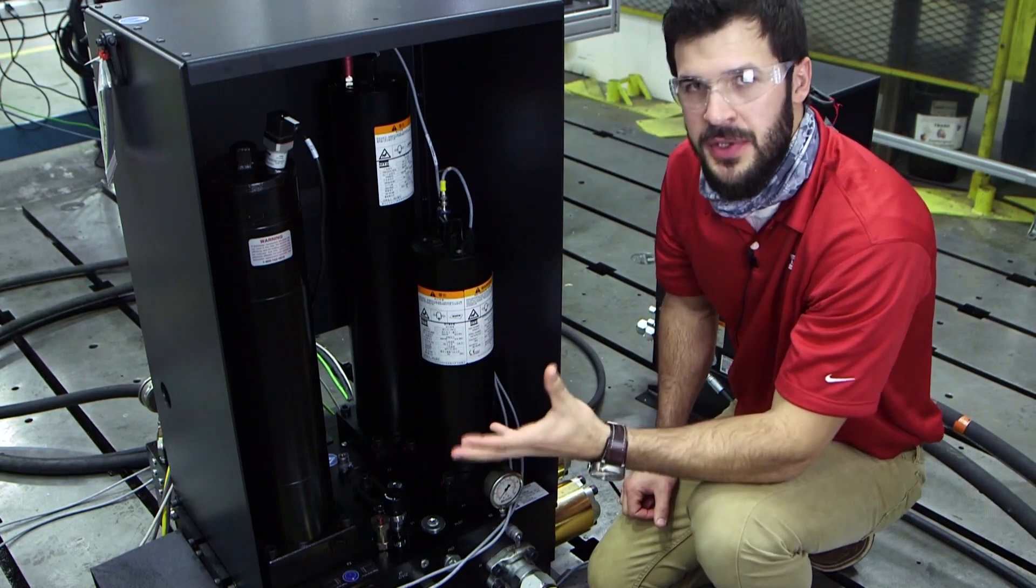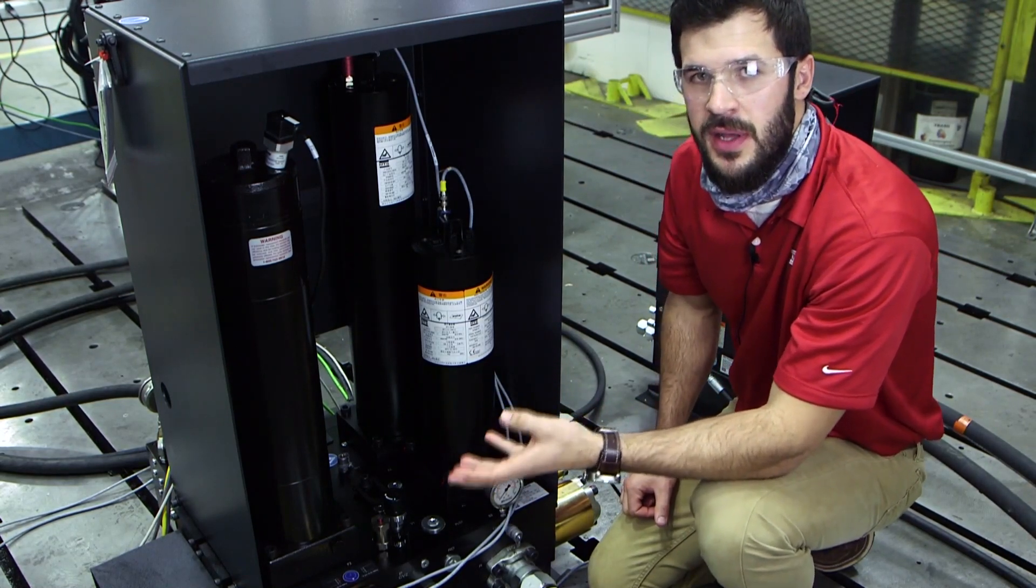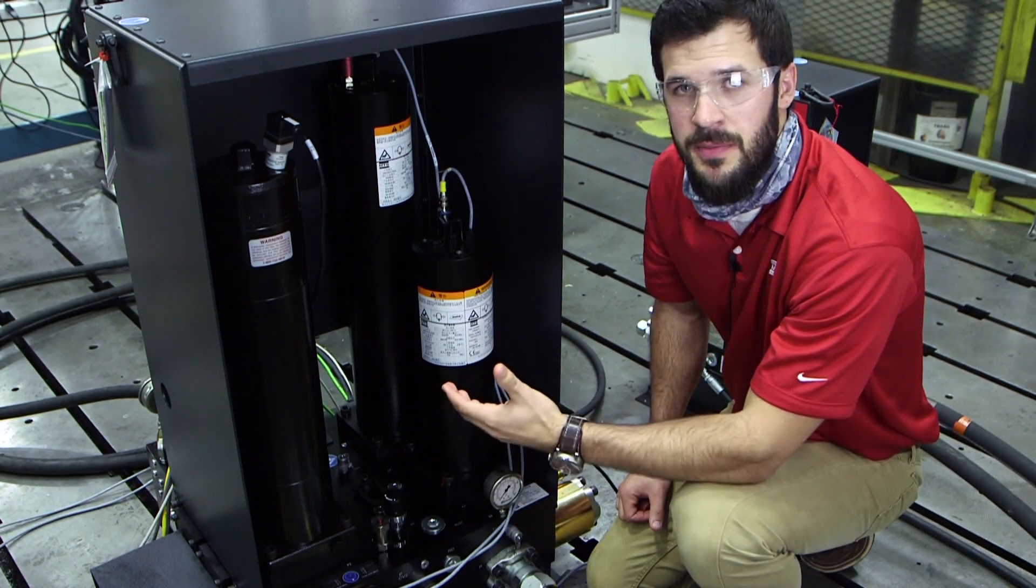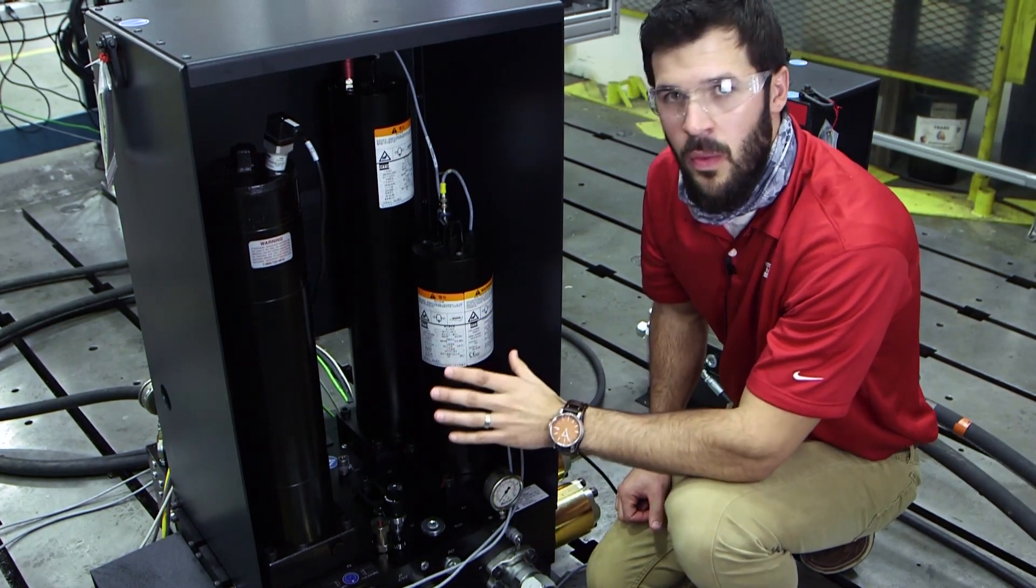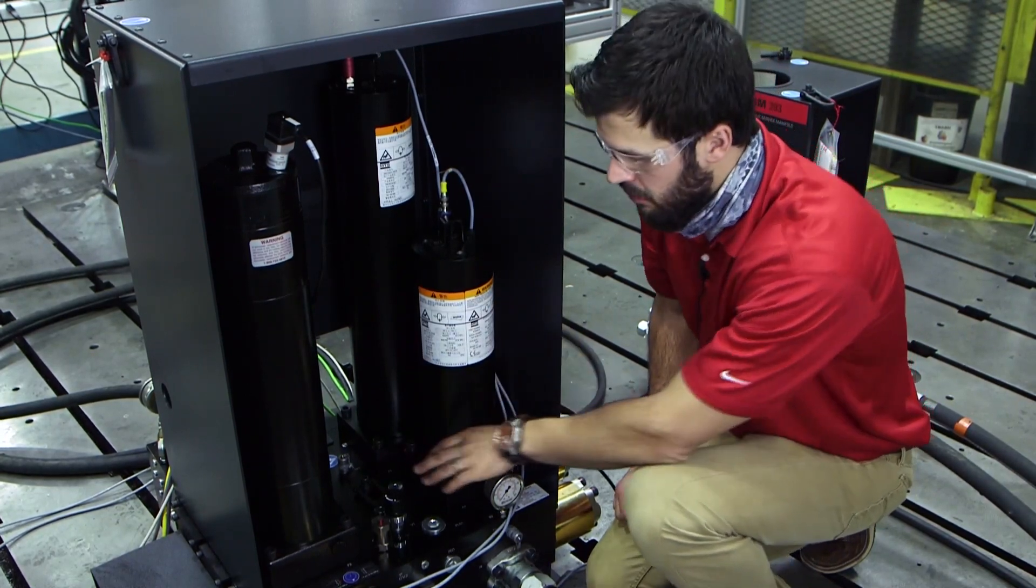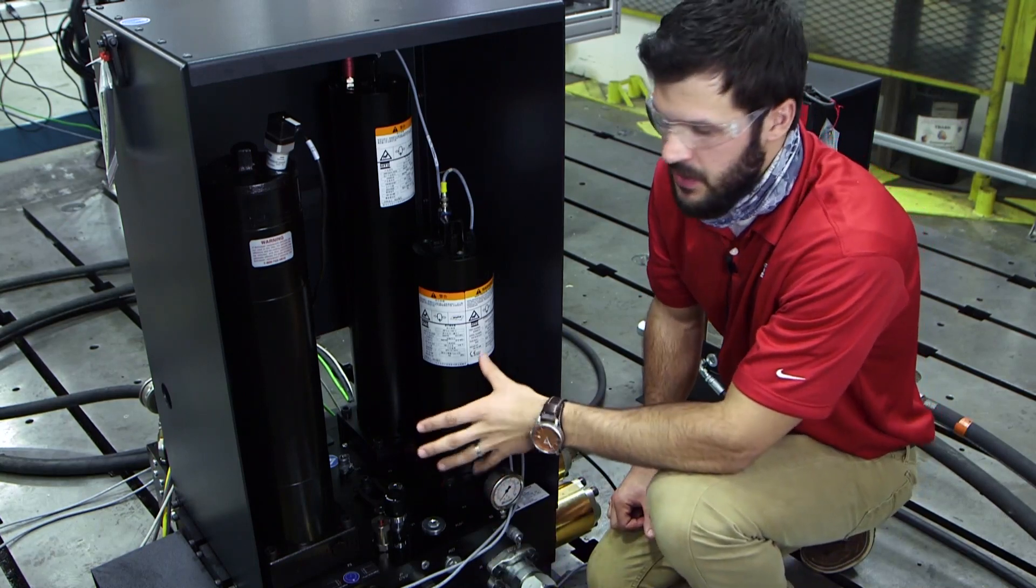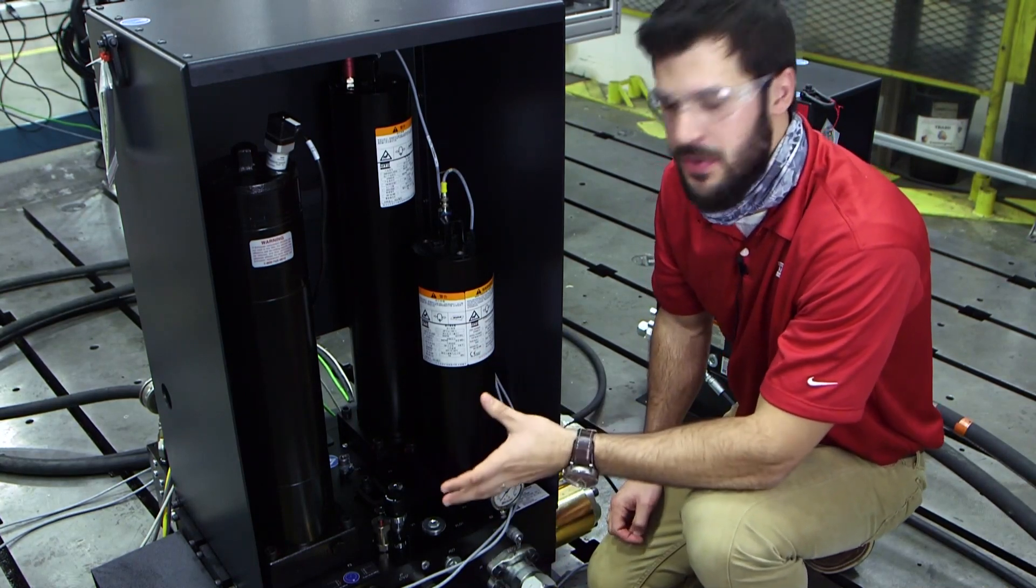What makes the 295 special is the R dump functionality that it offers. So if you're running a two channel system and you shut down channel one, you will not disturb channel two by allowing that oil to go through a separate return line. This system in specific is not equipped with that, but it is something you can add.